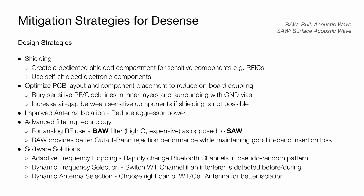In addition to hardware techniques, one can also resort to software solutions such as adaptive frequency hopping, as seen in the case of Bluetooth, where channels switch rapidly in a pseudo-random pattern. There is also dynamic frequency selection, as seen in Wi-Fi, where channels switch if an interferer is detected before or during operation. Finally, there is dynamic antenna selection in modern smartphones, where one can choose the right pair of Wi-Fi or cellular antennas for better isolation.